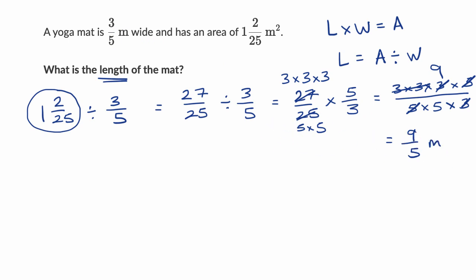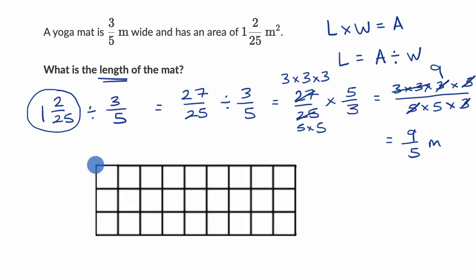Now let's make sure that this makes sense. So I'm going to make a grid. So this right over here is one-fifth of a meter. One-fifth of a meter in that dimension and one-fifth of a meter in that dimension.